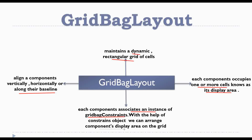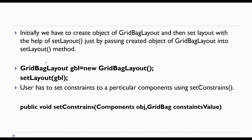Initially we have to create an object of GridBagLayout and then set the layout with the help of the setLayout method, just by passing the created object of GridBagLayout into the setLayout method. This is how GridBagLayout is used — here we create an object of GridBagLayout at JBL, and after that we pass the object of GridBagLayout into the setLayout method.